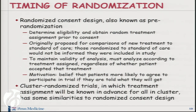The second approach to modification of randomization has to do with the timing of randomization — the randomized consent design, also known as pre-randomization, proposed also by Marvin Zelen. The concept is that you determine eligibility of a patient and obtain their random treatment assignment prior to talking to them, prior to obtaining consent. As originally proposed, this would be a comparison between a standard of care and a new approach, and the people assigned to standard of care wouldn't even be told about the study, wouldn't be asked for consent, because they were getting what they would have gotten outside the study.